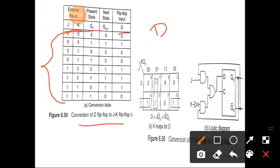Next, express the input of the existing flip-flop D in terms of external inputs J, K and the present state Q_N. Here is the conversion table. First, in this conversion table we need to find out the characterization table of the JK flip-flop. For that, we consider how the JK input changes the state from Q_N to Q_N+1.